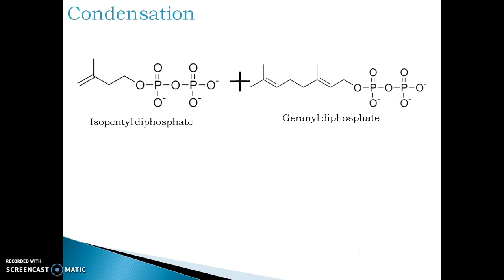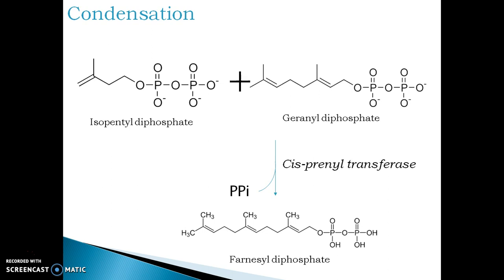Geranyl-diphosphate further condenses with isopentyl-diphosphate to form farnesyl-diphosphate. The same enzyme catalyzes this conversion. Farnesyl-diphosphate is a 15-carbon molecule.